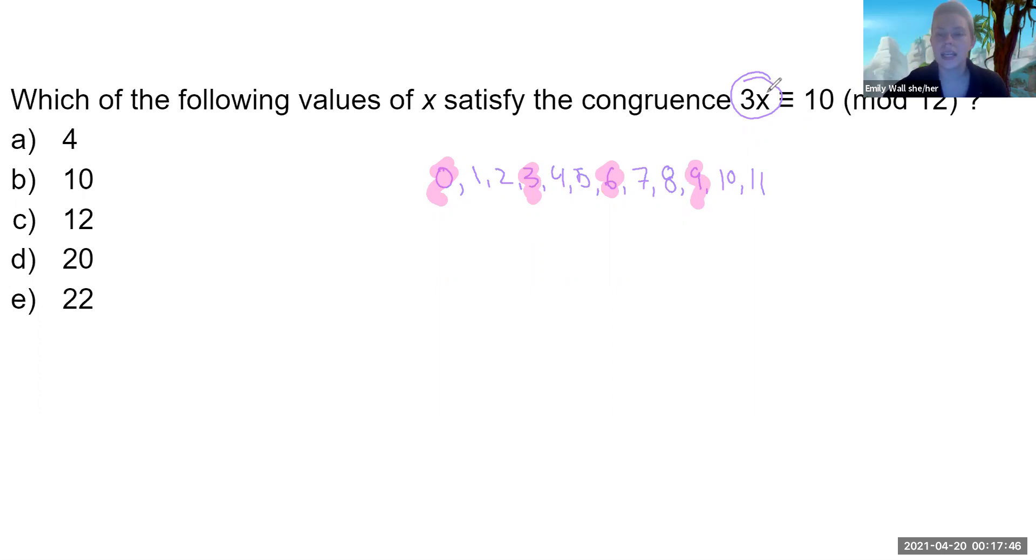So this left hand side has to be equivalent to one of these mods. And none of these are equivalent to 10 mod 12. So there actually is no solution to x here. It's never going to work. There is not a single number I could multiply three by that'd be congruent to 10 mod 12. It just can't happen.